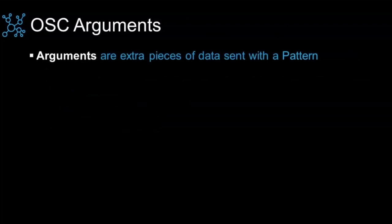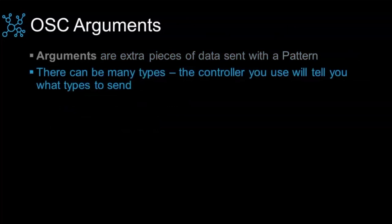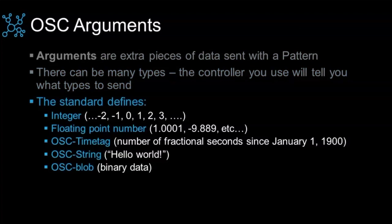Beyond basic commands, you can add arguments that give extra data and parameters. There are many types: integers (whole numbers), floating point numbers, OSC time tags (fractional seconds since January 1st, 1990), OSC strings, and OSC blobs. Once you get to an OSC blob, you can really send anything — JSON data, images, all kinds of things. Today we'll focus on integers, floating point numbers, and OSC strings, which are already very powerful.